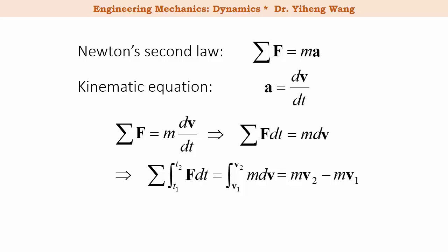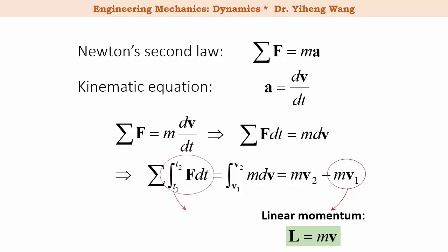We can define a new parameter to replace mv — it is known as the linear momentum, L, which equals m times velocity v. Both L and v are vectors. For the left hand side, we can define a new parameter as well to replace the integration term, which is called the linear impulse I, which equals the integration of force with respect to time for a process.